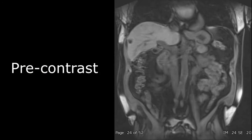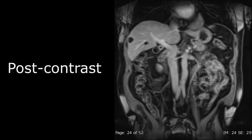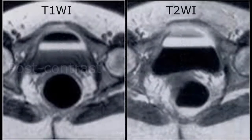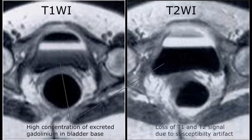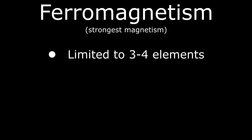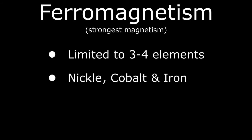Small amounts of a paramagnetic substance in the vicinity of hydrogen protons increases T1 signal, but in higher concentrations, the strong induced local magnetic field produces susceptibility artifact that destroys both the T1 and T2 signal, making them dark on the MRI. Finally, ferromagnetism is limited to basically three or four elements: nickel, cobalt, and of course iron metal.